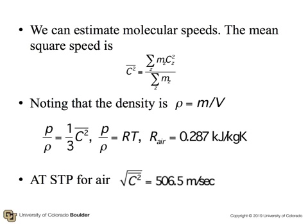So we can estimate molecular speeds. The mean square speed C squared bar is equal to the sum of mC squared over the sum of the masses, and noting that the density is mass divided by volume, then P over rho is equal to 1 third C squared bar. P over rho is also equal to RT. So we can get C squared from this, and it turns out that the root mean square of the molecular temperature speed for air is about 506.5 meters per second.